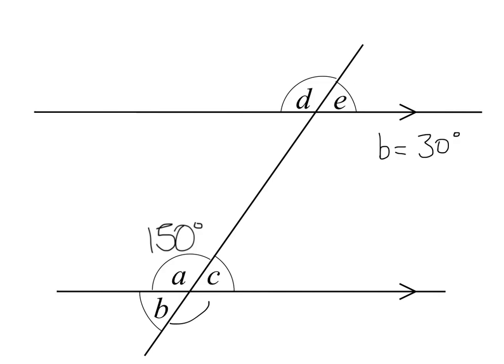You can see there that B and C are opposite angles. So C equals B. So C equals 30 degrees too.